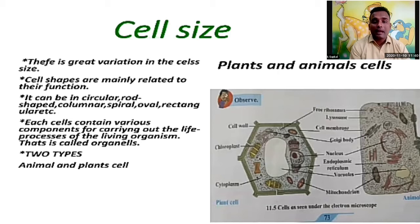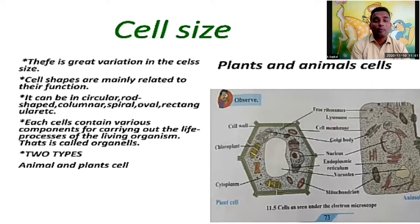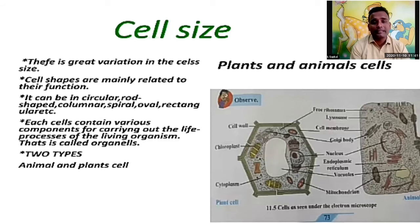The two types are plant cell and animal cell. You can see on the screen the plant cell and animal cell. Both are living things so many things are common, but some things present in the animal cell are not in the plant cell. For example, chloroplasts are present in the plant cell but not in the animal cell. Because of chloroplasts, photosynthesis takes place and the leaves are green in color.